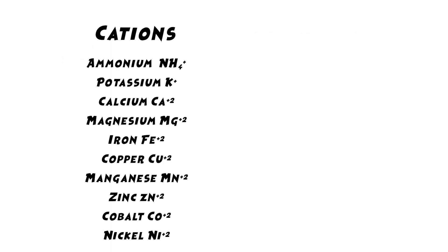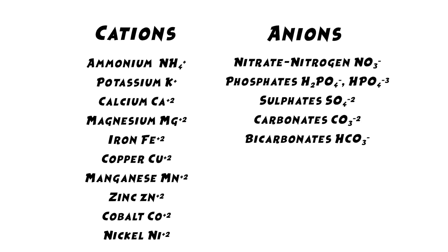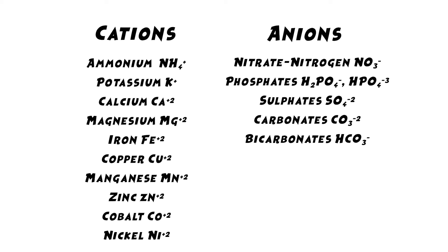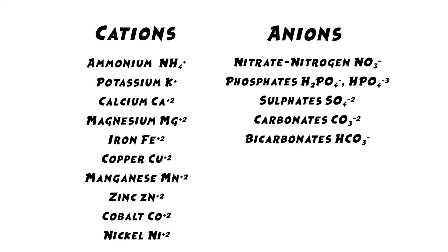Examples of cations include ammonium, potassium, calcium, magnesium, iron, copper, zinc, cobalt, and nickel. Examples of anions include nitrate nitrogen, phosphates, sulfates, carbonates, and bicarbonates.